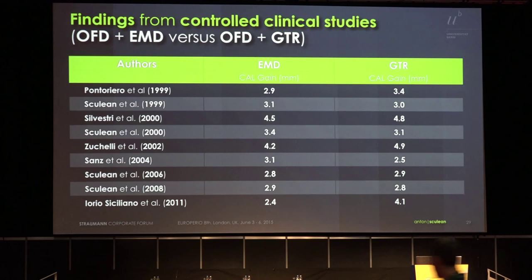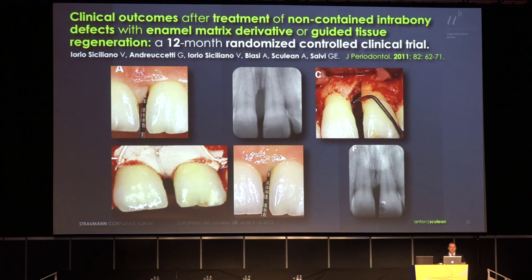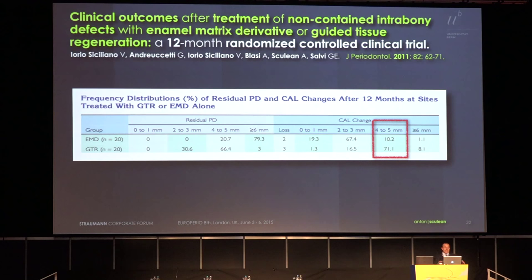However, if you look at one-wall non-contained defects, this is a randomized controlled study where we compared outcomes. You see the one-wall defect with non-contained anatomy treated with enamel matrix proteins — the outcome is nice, but we have some recession. However, if we look at the case treated with a titanium-reinforced membrane, we had less recession, indicating that we have a higher chance to gain at least 4–5 millimeters in a case where we can maintain the flap. This is very important.